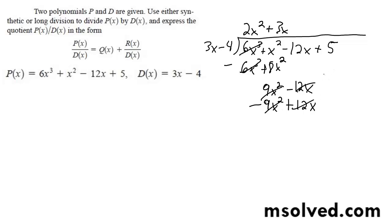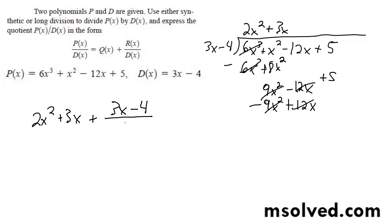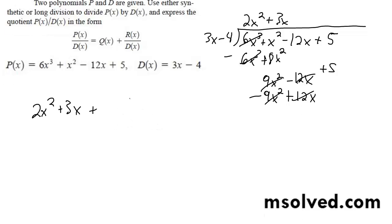And then I'm left with plus 5, and I can't divide further — 3x doesn't fit into 5. So our final solution is 2x squared plus 3x, with a remainder of 5 divided by 3x minus 4.